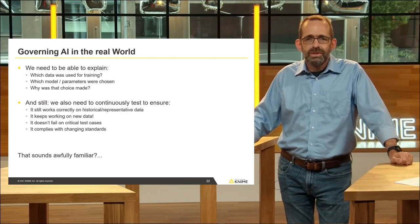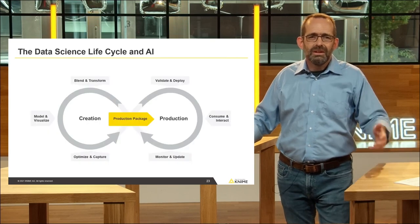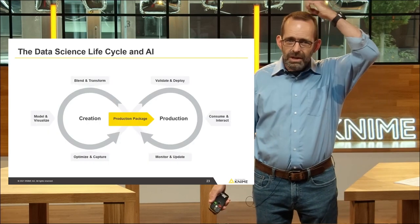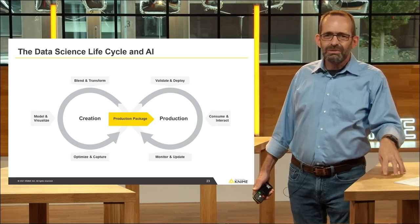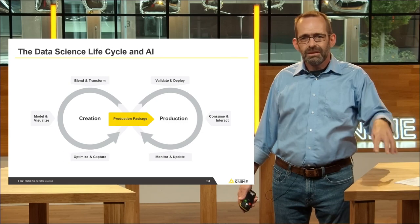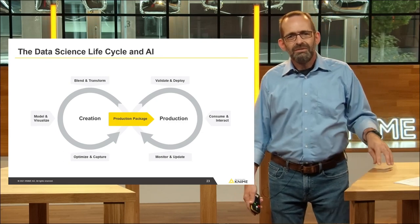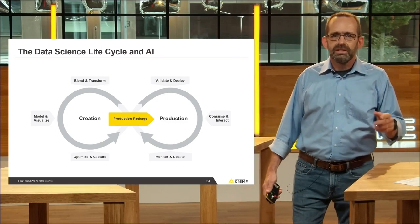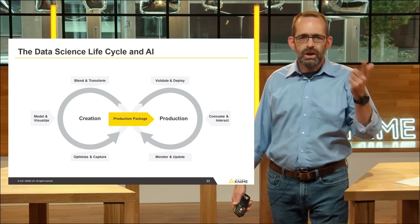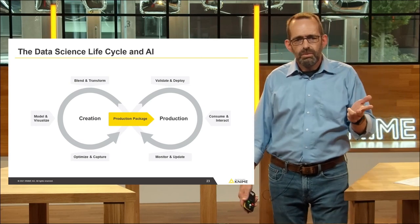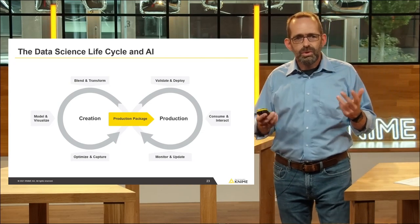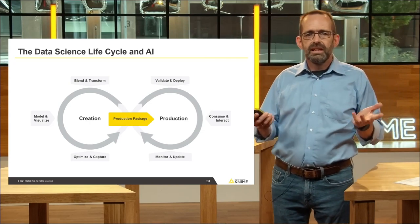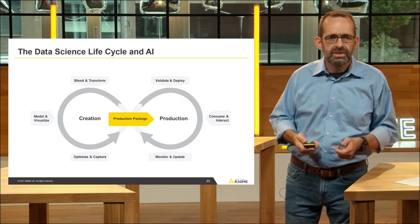This sounds awfully familiar. Because in the end, it's all of this stuff is something that's part of the data science life cycle. When we put data science production models into production, final data science models into production, we need to observe all of these types of things as well. We need to validate them. We need to make sure how to deploy them. We need to make sure we monitor and update all of that stuff. So AI, in our view, is a subset of the data science life cycle. That's an ingredient, all of those things.